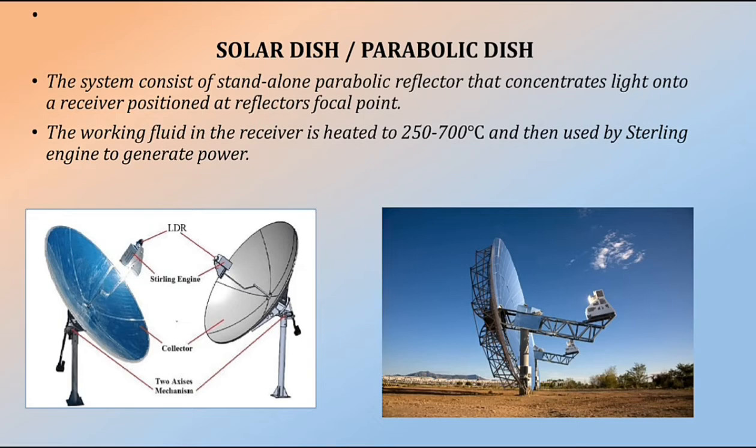The solar dish or parabolic dish system is a dual-axis tracking, point-focus system. It consists of a parabolic reflector that concentrates light onto a receiver at the reflector's focal point. The working fluid in the receiver is heated up to 250–700 degrees Celsius. The receiver is coupled to a Stirling engine that can generate power.